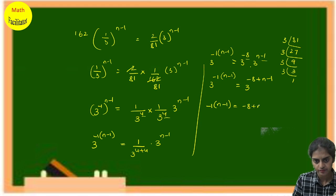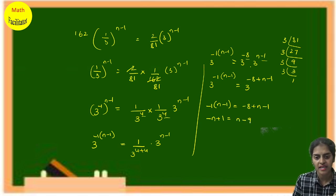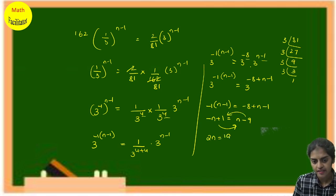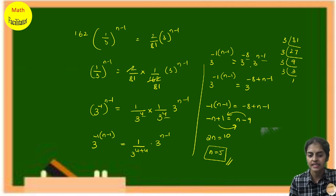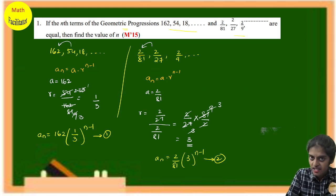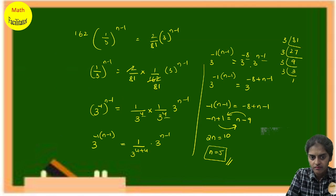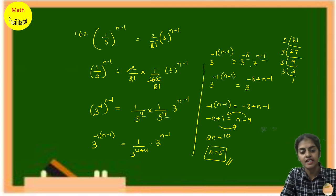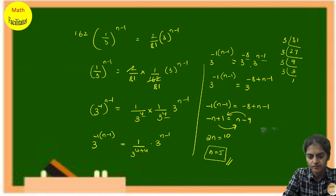Equating the powers: −(n−1) = n−9, which gives −n+1 = n−9. Taking both n's to one side: 10 = 2n, so n = 5. This is an essay question where you find the nth term of each GP, then equate both to find n. You also need your laws of exponents from class 7 or 8.